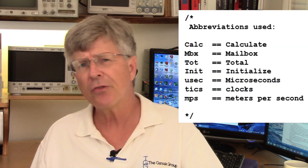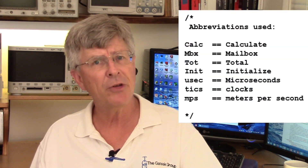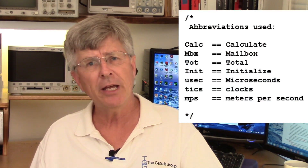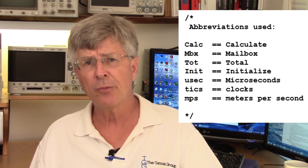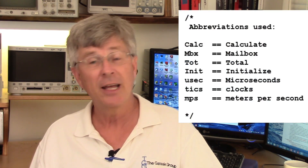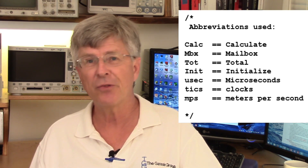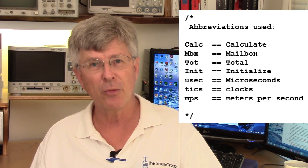Now, I said there were two exceptions. The first, of course, is anything that's industry standard — everyone knows what USB means. And the second exception is anything we've defined in a data dictionary, perhaps in a header file somewhere. So, for example, MPS means meters per second, and everyone in the project is using exactly the same abbreviation, so it's very clear what this means.